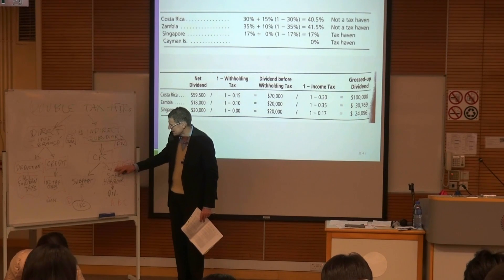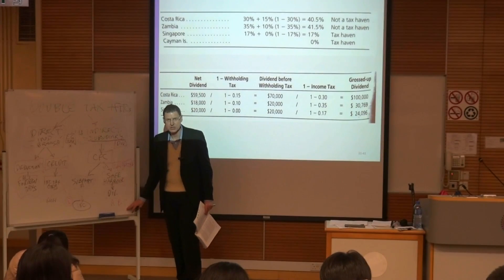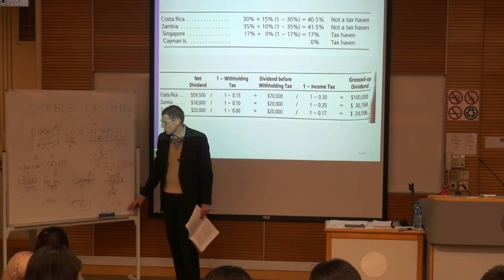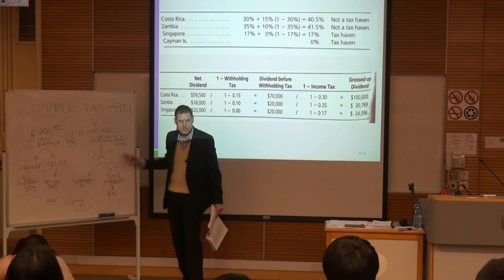They're still under safe harbor because they're either manufacturing or their tax rate is similar to the US. Paying a dividend, they get the full benefit of the tax credit.